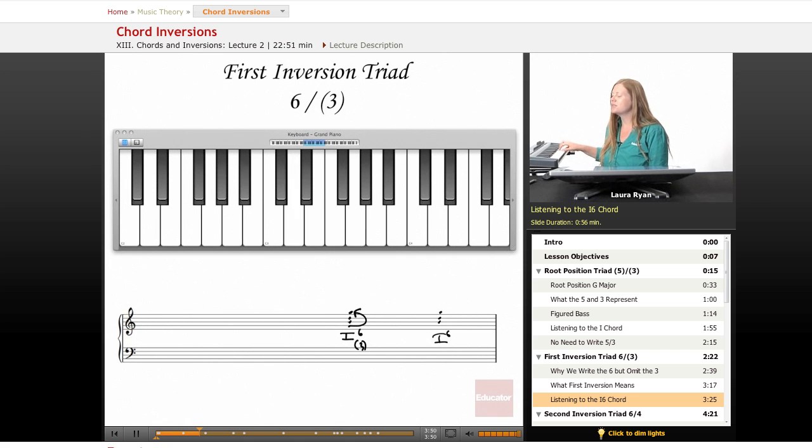One, two, three, four, five, six. Between the bottom note and the root of the chord, which is now on top, there are six tones, which is why we have six there.